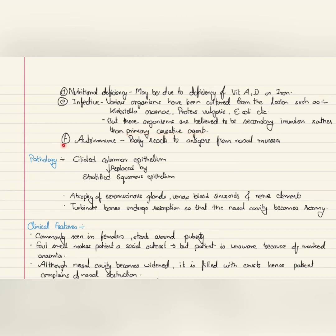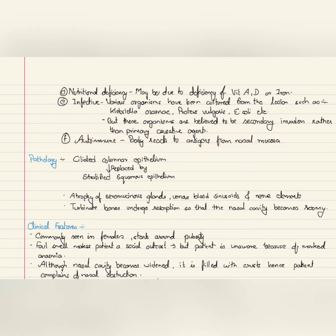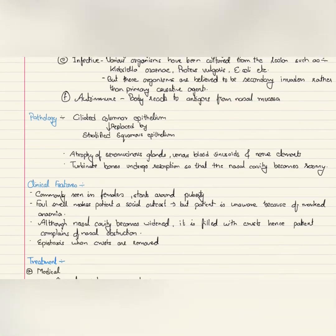Lastly, A is for autoimmune, where the body reacts to antigens from the nasal mucosa. This antigenicity of the nasal mucosa might be due to various external factors such as viruses, bacteria, or any other allergens.